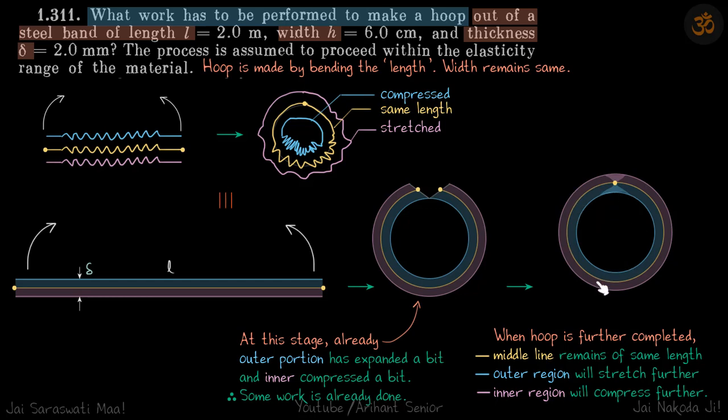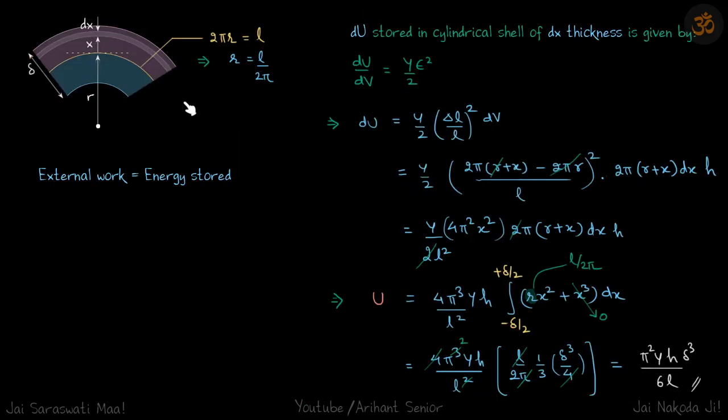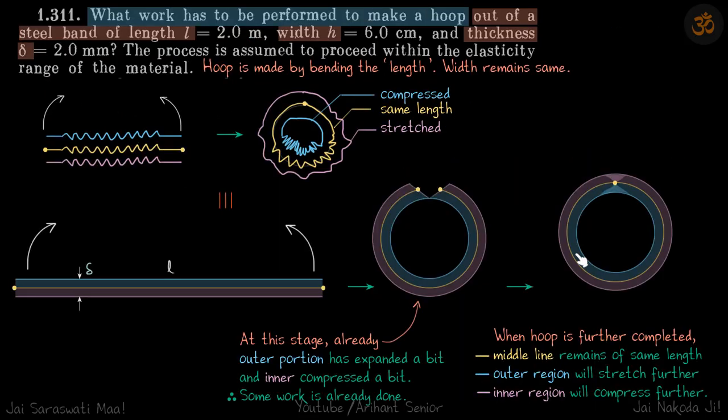So this is what's going on and now let's do the calculations. And yeah, see this part there is compression, this part there is expansion, but our formula is half Y into strain square, so strain square is positive here and strain square is positive here also.